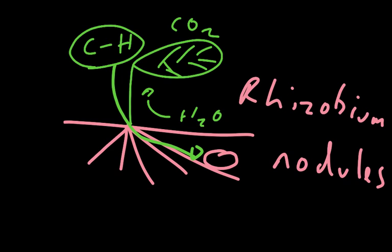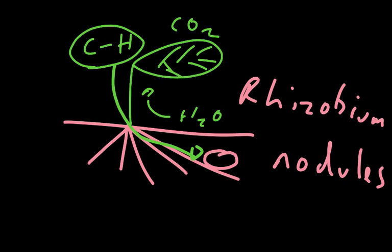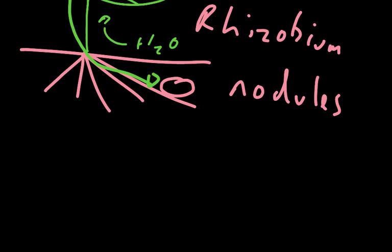Additionally, the plant is altering the environment in this root nodule to make the environment more favorable for the fixation of nitrogen. The way it's doing that is it's lowering the concentration of oxygen by having a pigment in there called leg hemoglobin.